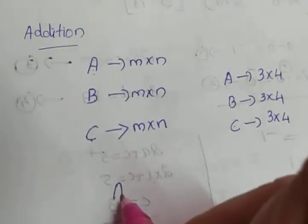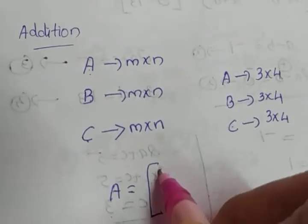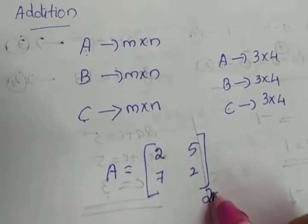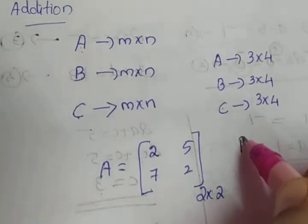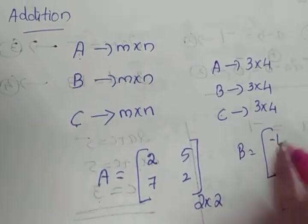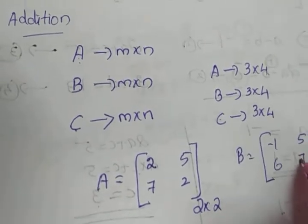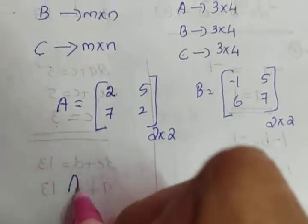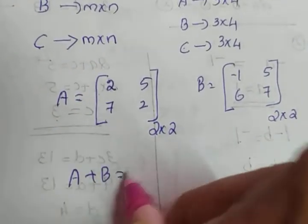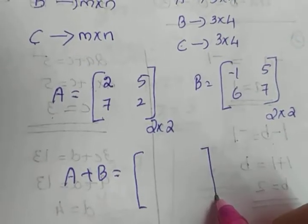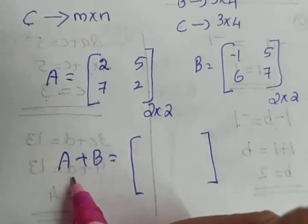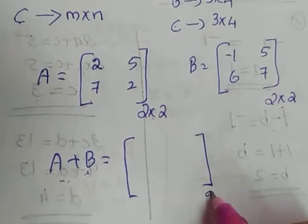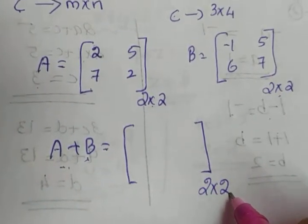Let's take an example. Suppose A equals the matrix [2, 5; 7, 2] — a 2 by 2 square matrix. Let B be [−1, 5; 6, 7], which is also a 2 by 2 matrix. We want to find A plus B. Before computing, we can already say the order of A plus B will be 2 by 2, since both A and B are 2 by 2.